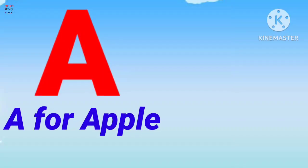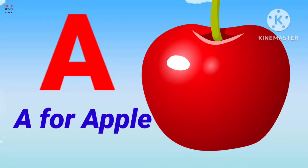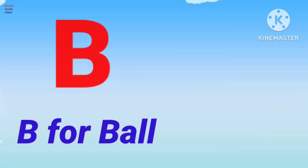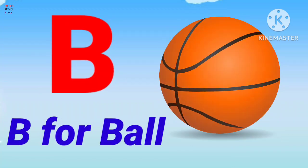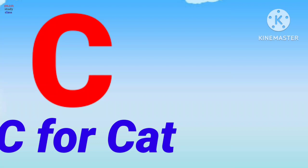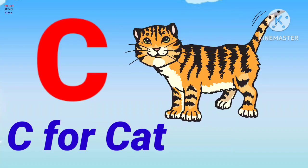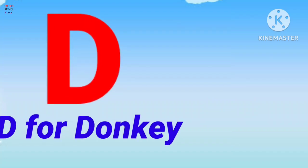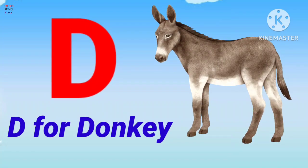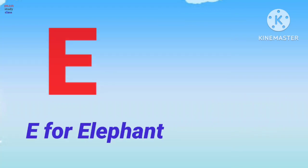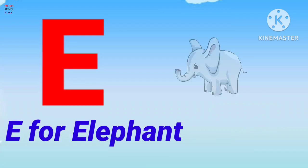A for apple, apple means safe. B for ball, ball means gained. C for cat, cat means billy. D for donkey, donkey means gada.